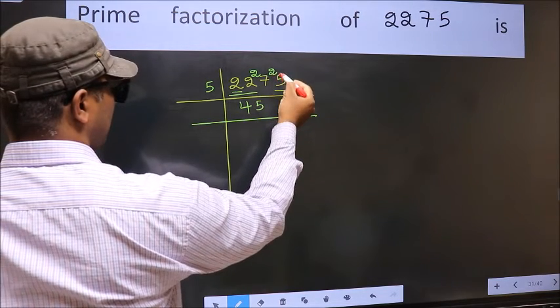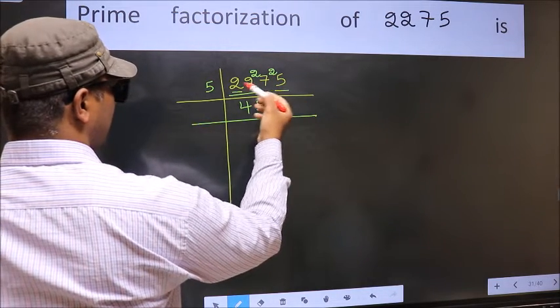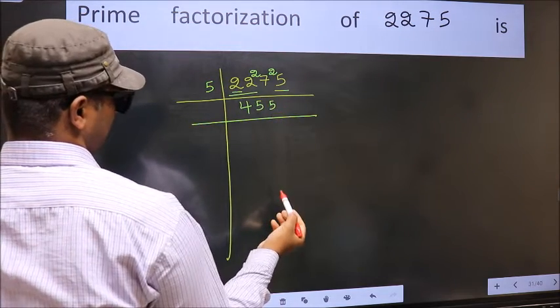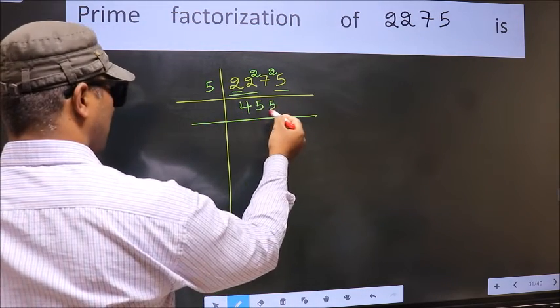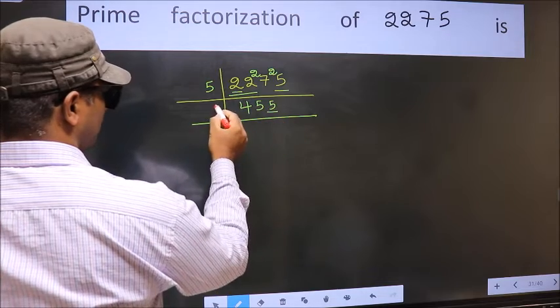2 carried forward. 25. When do we get 25 in 5 table? 5 fifths, 25. Now the last digit is 5, so take 5.